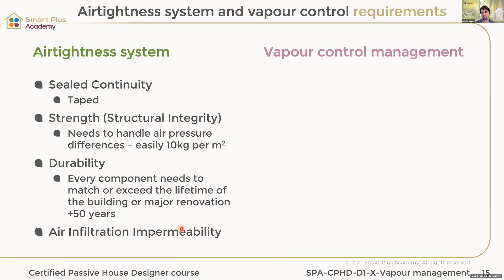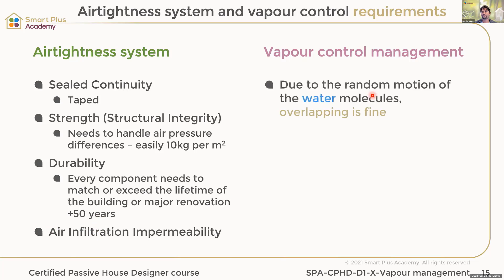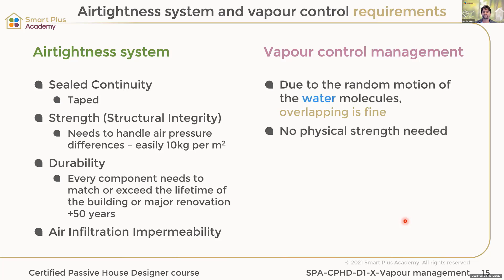It needs to meet air infiltration and permeability requirements — so it needs to be airtight. Then there's vapor control management. An air tightness system is an air barrier. We could call it an air tightness system barrier, but we normally distinguish vapor control management separately. Due to the random motion of water molecules, overlapping is fine and no physical strength is needed.